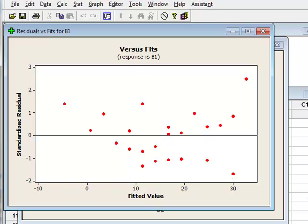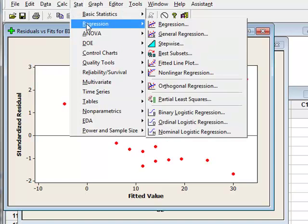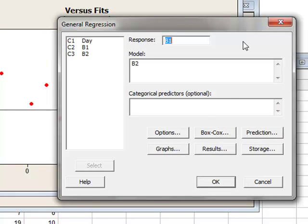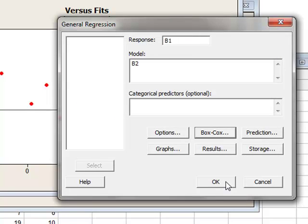It is now appropriate to see if a transformation will give a better fit. We will return to Stat, Regression, General Regression but now we will select a Box-Cox transformation by clicking here, and we will request the analysis to fit an optimal value of lambda. We click OK and run the analysis again.